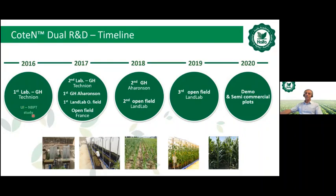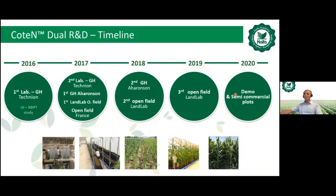To do this, we started cooperation with the Technion Institute in Haifa, Israel, testing the urease inhibitor NBPT to study and understand its effectiveness. The following year, we extended the trial to continue at the Technion, but also started trials at the Aronson Farm — Haifa's R&D center in Israel — and at Land Lab, a private agricultural research institute in northern Italy, plus some operative trials in France. This continued through 2018 and 2019. By the end of 2019–2020, we started semi-commercial trials, and today we are ready to provide Content Dual on a local basis.